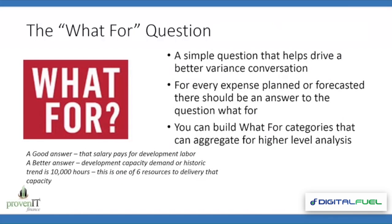The first step on this journey is the concept called the 'what for' question. It's a very simple question and the goal is to drive a better variance conversation. For every expense that gets planned or forecasted, there should be an answer to the question: what is this expense for? If we have 'what for' commentary built into our plans and forecasts, we can begin to build a much better way to understand the variances between actuals, plan, and forecasts.